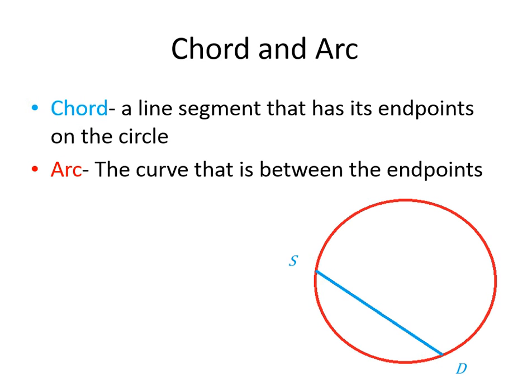Let's start off with the difference between an arc and a chord. A chord is a line segment that has endpoints on the circle — any line that goes from one point of the circle to another point. That is called a chord. So, like down in this image below, SD would be considered a chord. When you write a chord, you just write it like that.